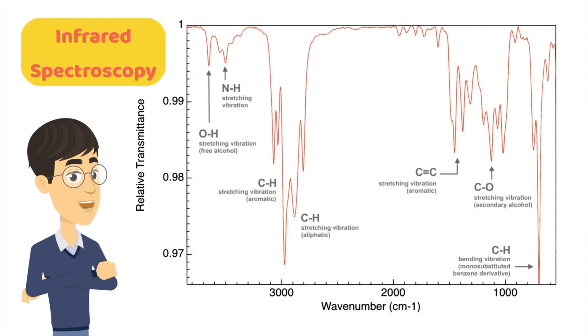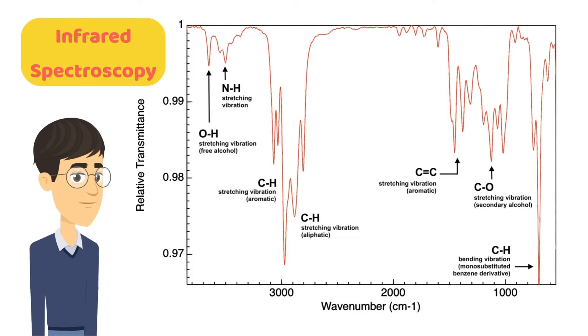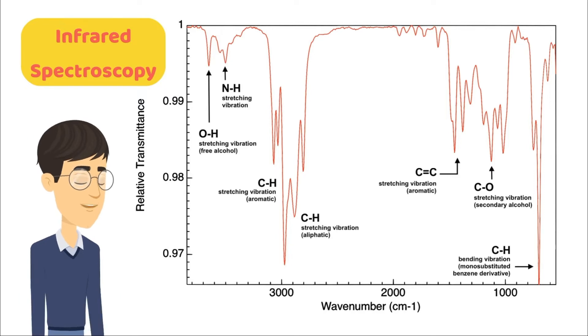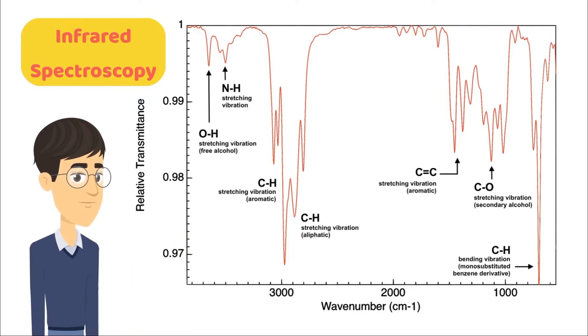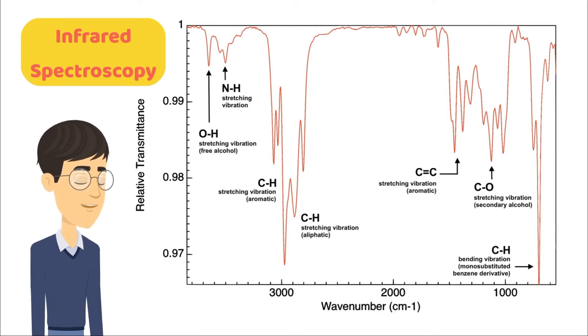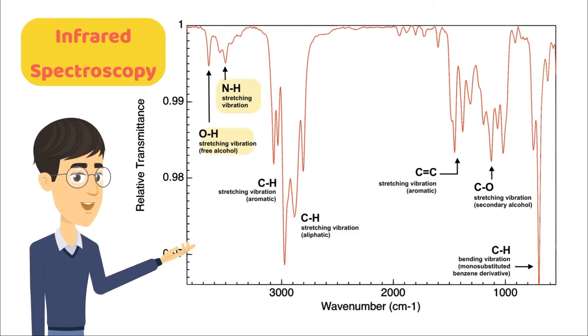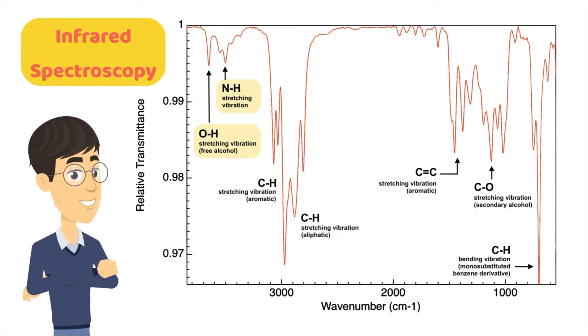To identify the mystery compound, Prapto can use a set of spectrometric techniques. Using infrared spectroscopy, Prapto can find what functional groups are present in his compound or molecule. These different functional groups absorb light at different wavelengths depending on the atoms making up the molecule and the bond types.